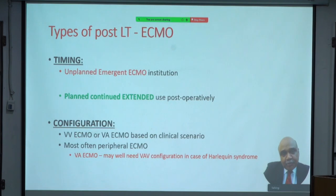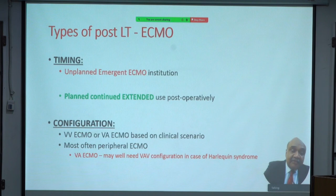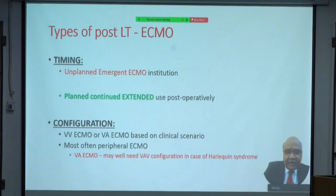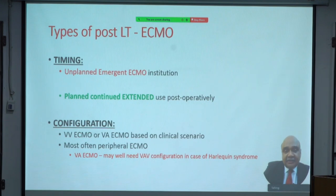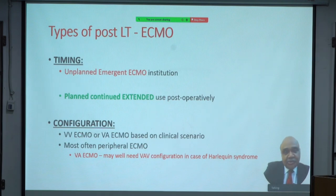Regarding the configuration of the ECMO circuit, most often it is VV ECMO to provide lung support. It may be VV or VA ECMO based on clinical need — if cardiac support is needed it will be VA ECMO. Most often it is peripheral ECMO configuration. In the presence of lung failure with VA ECMO, there may be a requirement for an additional venous cannula connected to the return cannula — a VAV configuration — to deal with hypoperfusion of the upper limb due to poorly functioning lungs, known as the Harlequin syndrome.